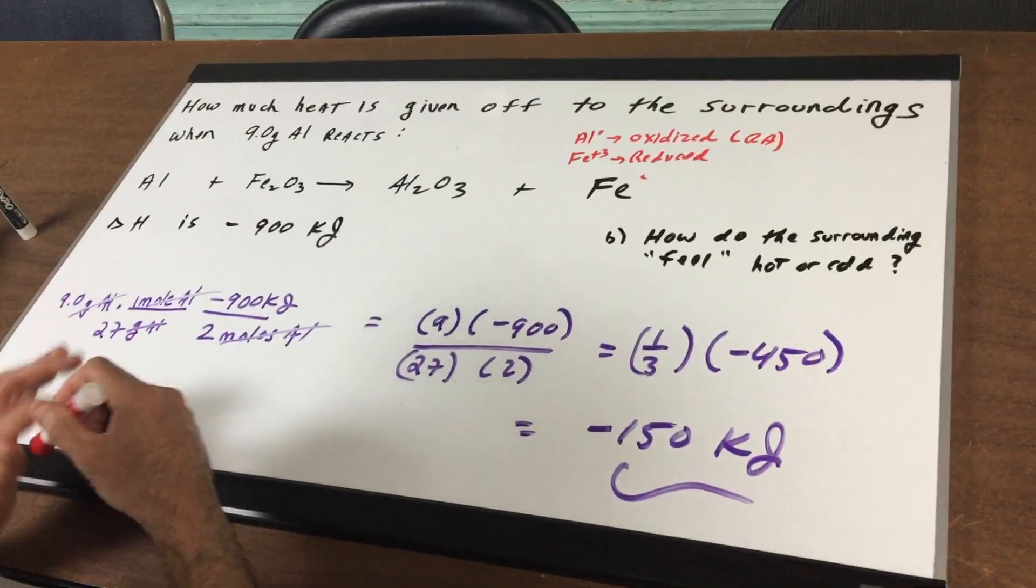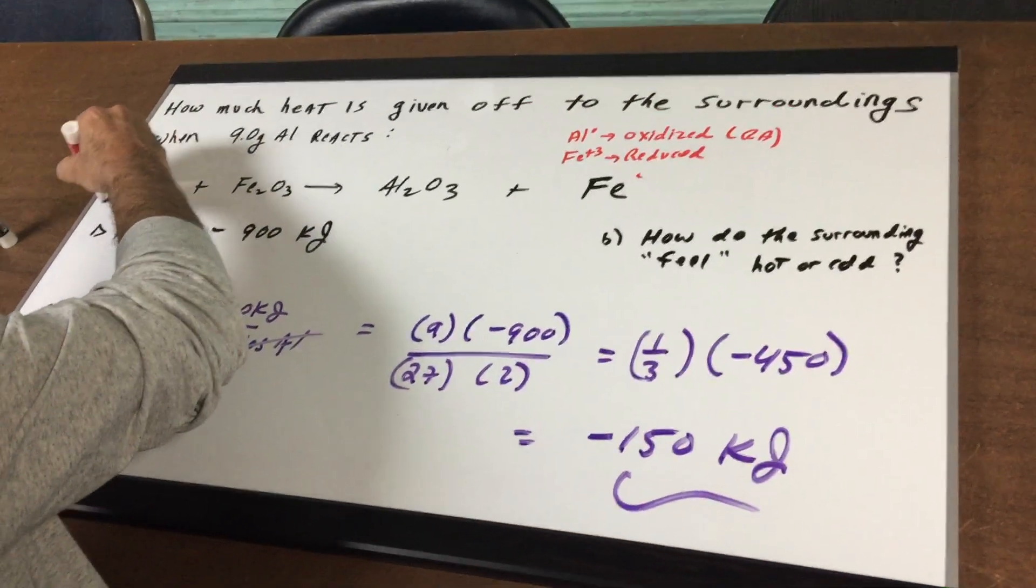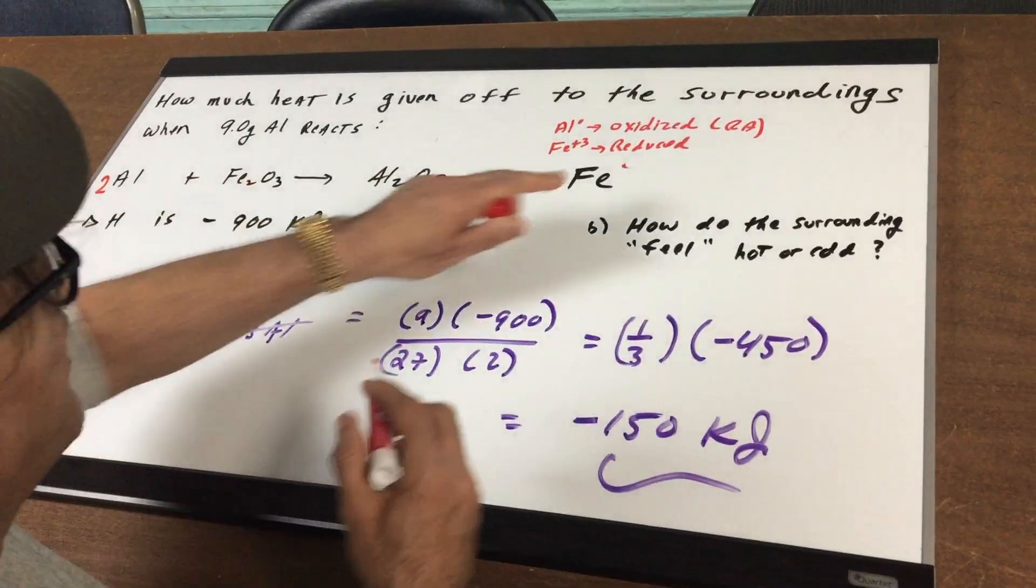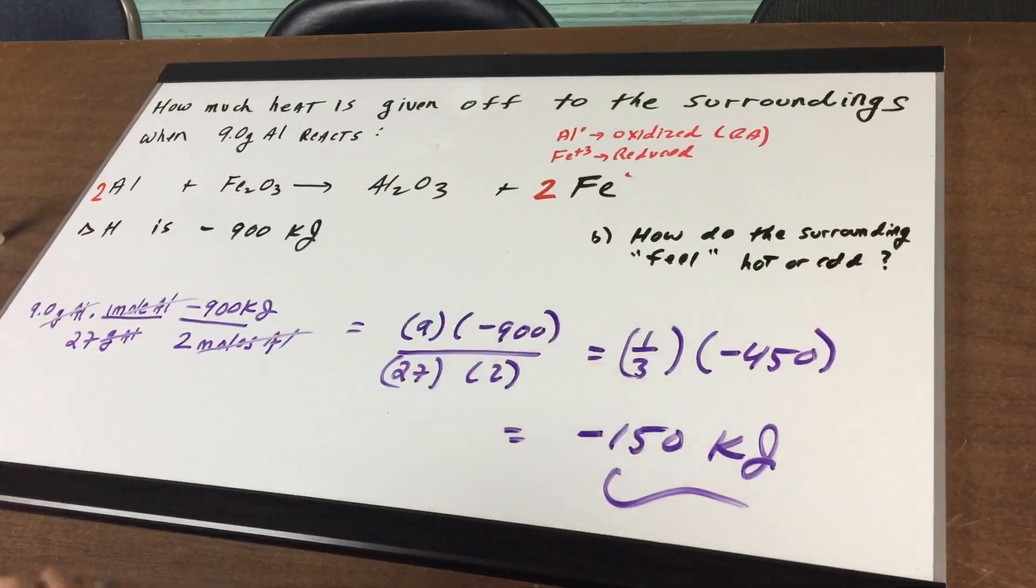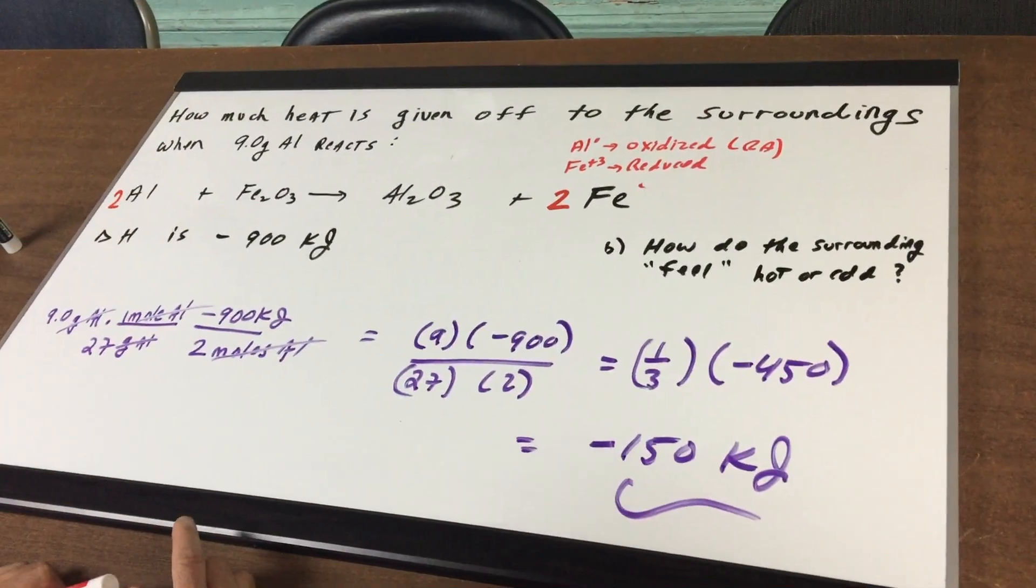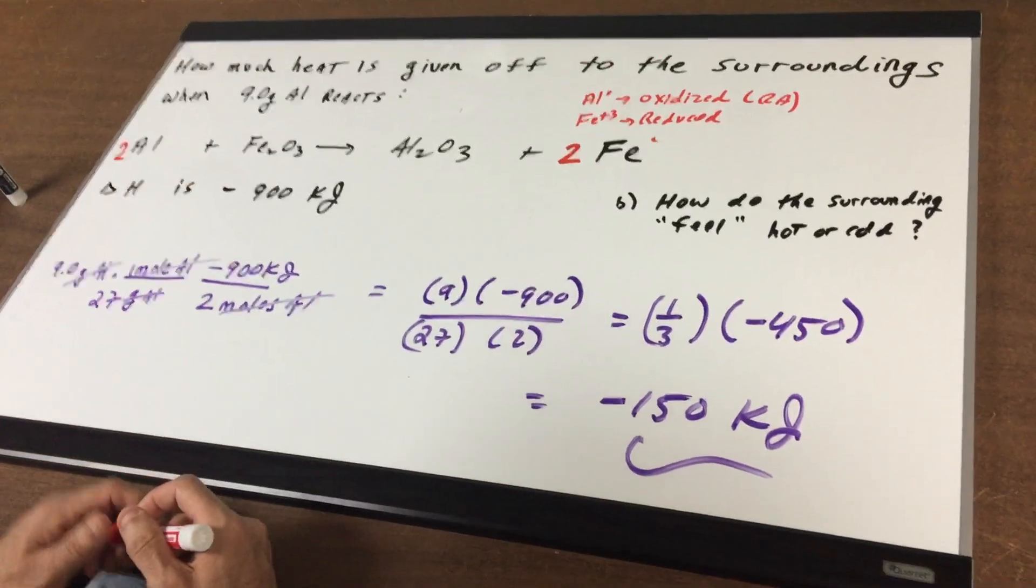Now, the first thing we want to do is, this equation is not balanced. There's two aluminums here, so I need to put a two here, there's two irons here, and you need to put a two irons here. So, the first thing you should always make sure you do in a reaction is make sure everything is balanced.